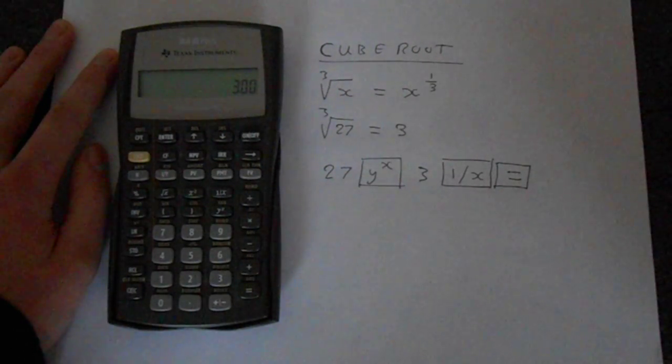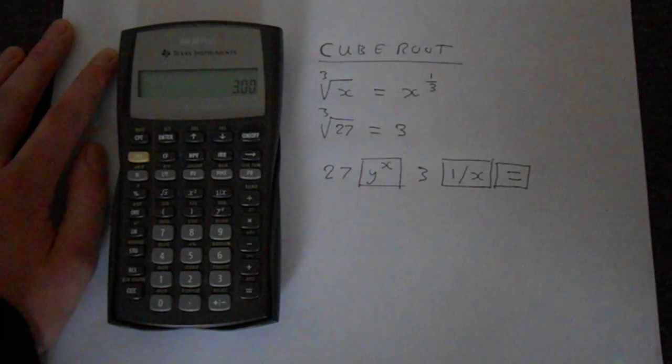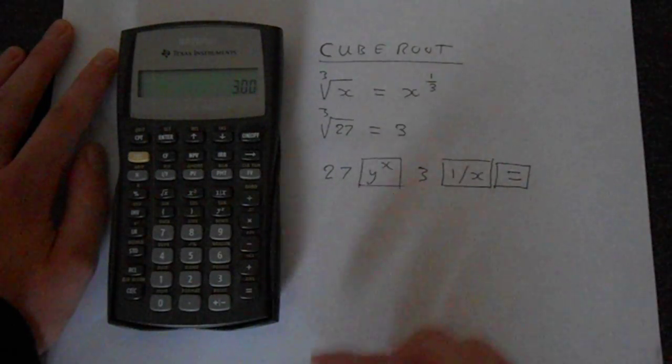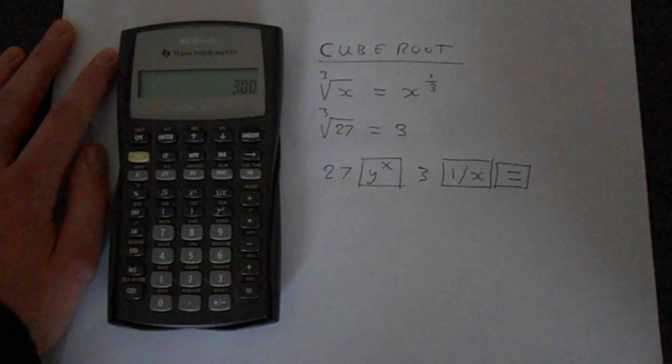And that's how you find a cube root. Very simple. Just enter 27, then y to the x and then the 1 over x is all you need and that works every time.